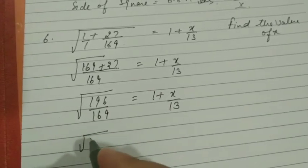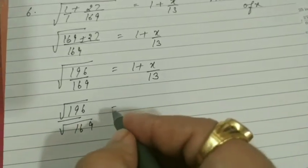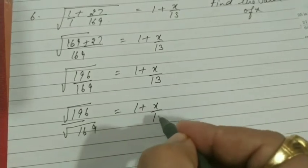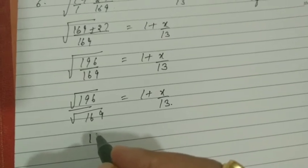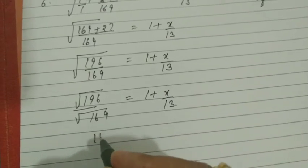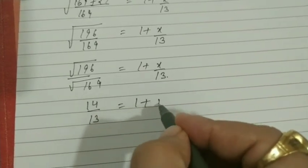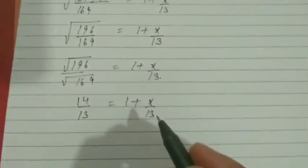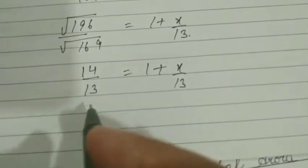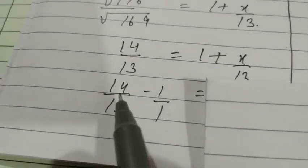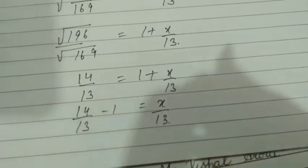We have made this into root of 196 over root of 169. The root of 196 is 14, and the root of 169 is 13. So we have 14/13. We need to find x's value, so we take 1 to this side. When it changes its sign, it will be minus: 14/13 − 1 = x/13.